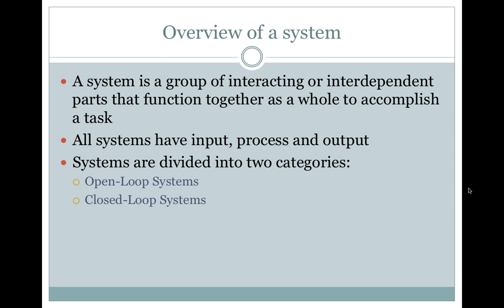Overview of a system. A system is a group of interacting or interdependent parts that function together as a whole to accomplish a task. All systems have input, process, and output. Systems are divided into two categories: open loop systems and closed loop systems.